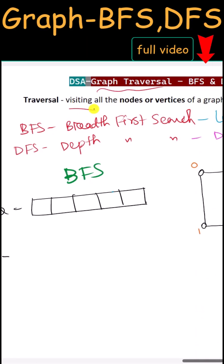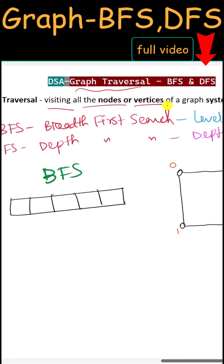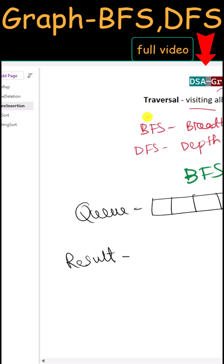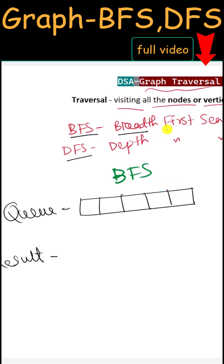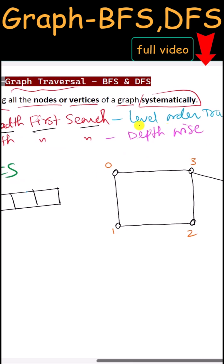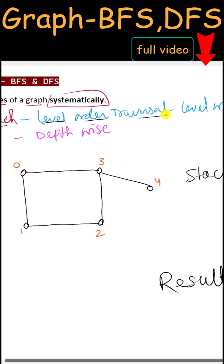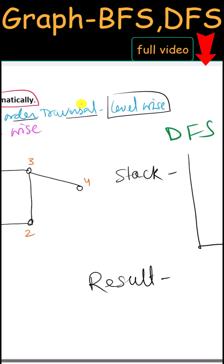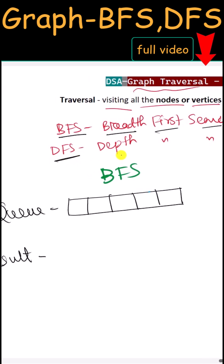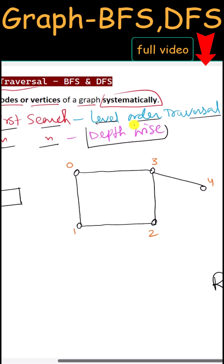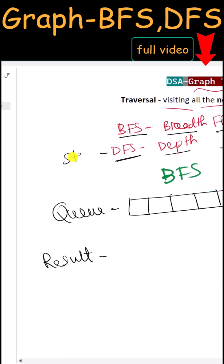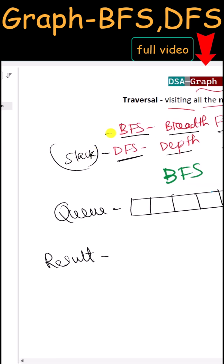Graph traversal means visiting all the nodes or vertices of a graph systematically. There are two ways we can traverse: either BFS (Breadth First Search), also known as level order traversal where we traverse level-wise, or DFS (Depth First Search) where we perform traversal depth-wise. In DFS we use the stack data structure; in BFS we use the queue data structure.